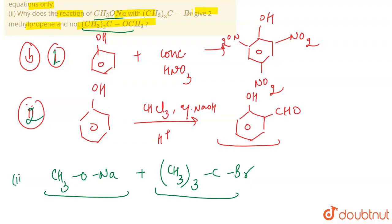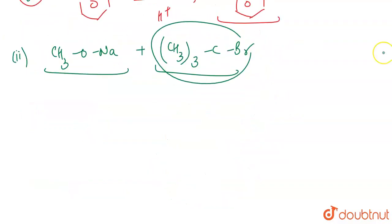So why do we do this? Because this is a stable carbocation. This is an alkene which is formed as a major product.